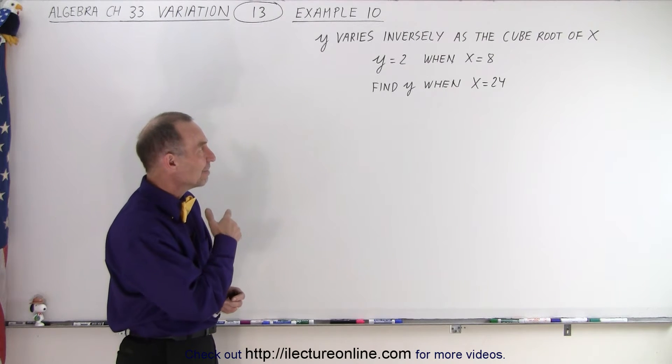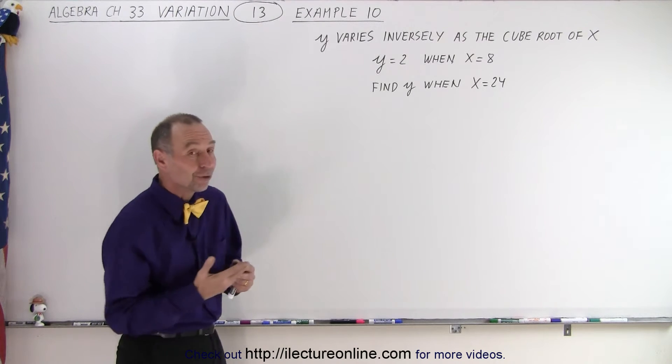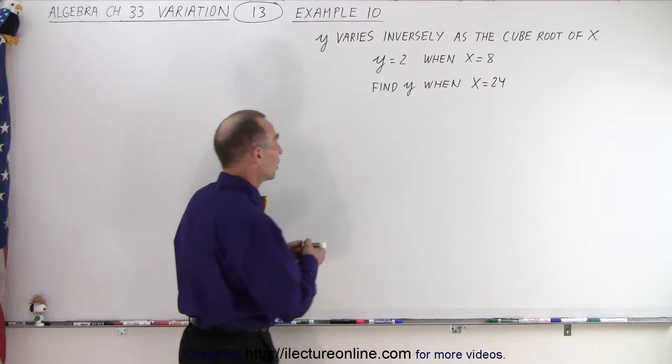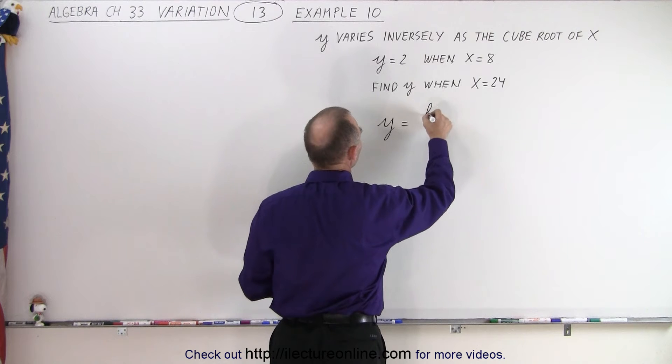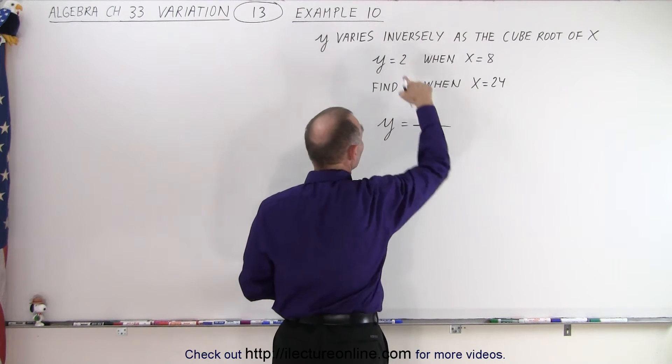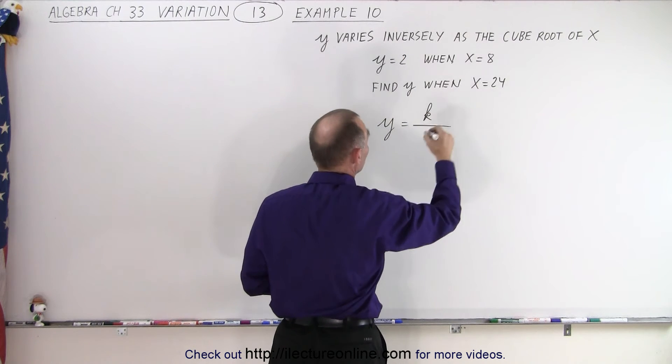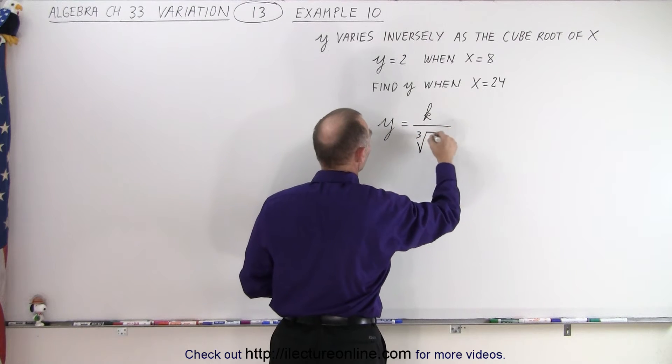So it looks like it's an inverse relationship and it's inverse with the cube root of x. So the equation should look something like this. We have y is equal to k divided by, because it's inversely related, the cube root of x.